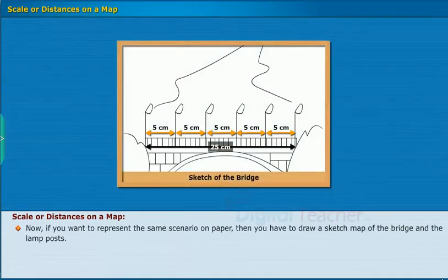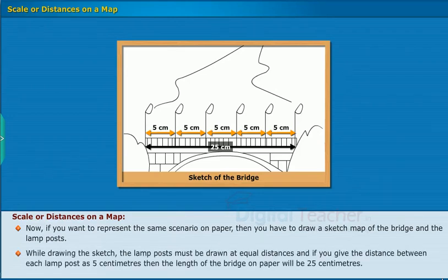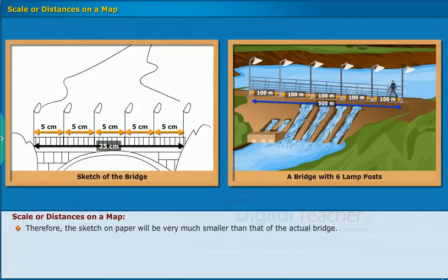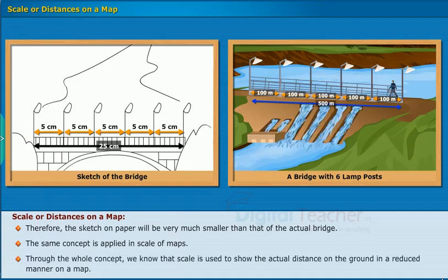If you want to represent this scenario on paper, you draw a sketch map of the bridge and the lamp posts. In the sketch, the lamp posts must be drawn at equal distances. If you give the distance between each lamp post as five centimeters, then the length of the bridge on paper will be 25 centimeters. Therefore, the sketch on paper will be much smaller than the actual bridge — this is the concept of scale. Scale is used to show the actual distance on the ground in a reduced manner on a map.